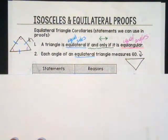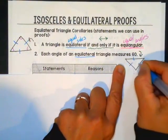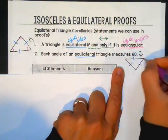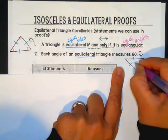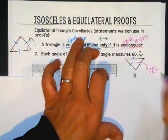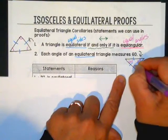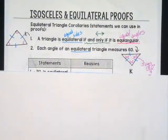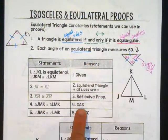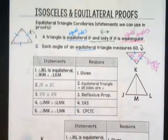One more corollary: each angle of an equilateral triangle measures 60 degrees. If a triangle is equilateral it is also equiangular, so all angles are equal. The angles in a triangle sum to 180 degrees; divide by 3, and each angle must be 60 degrees. That should just make sense. Go ahead and read through these proofs — we're getting triangles congruent using one of our five reasons, and right after we have angles congruent that's CPCTC.